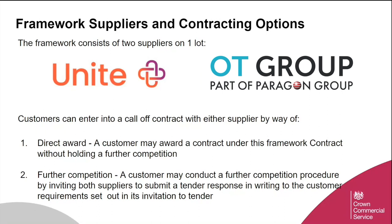However, if one of the supplier solutions does not meet the customer's requirements, they can conduct a further competition procedure by inviting both suppliers to submit a tender response. To help, CCS has produced a suite of customer guidance documents including direct award and further competition overviews. We also have a how-to-buy section on our framework webpage that will provide further guidance around this process.